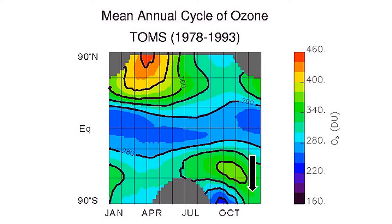Then, at the beginning of the Antarctic summer in about November, the atmosphere warms and the polar vortex breaks down, and the ozone hole is filled in.